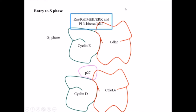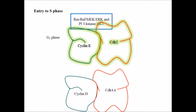Once p27 binds to the cyclin D-CDK4/6 complex, it prevents the rebinding of p27 with cyclin E-CDK2. After complete activation of the cyclin E-CDK2 complex, it will phosphorylate p27 and it will be completely degraded. Now the cell is able to cross from G1 to S phase.